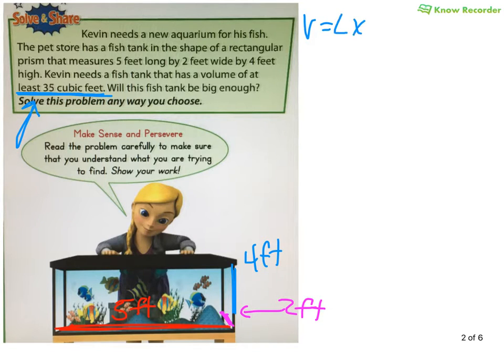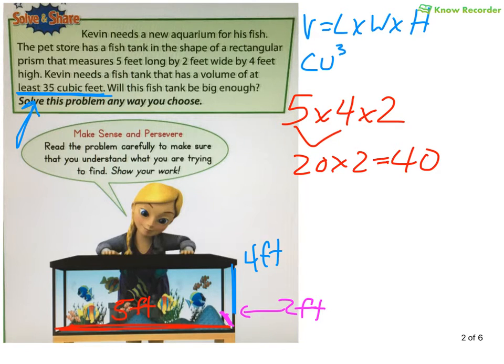If you remember, volume was length times width times height, and whatever we're putting this in, it's always going to be cubic units - whether it's inches, feet, centimeters, millimeters. It's got to be cubic because we're working with three different dimensions: a length, a width, and a height. So we have 5 times 4 times 2. It does not matter which order we multiply them. I could do 4 times 2 is 8, then 8 times 5 is 40. I could do 5 times 4 is 20 times 2 is 40. No matter how I do it, I'm going to get 40 feet cubed or cubic feet. So this fish tank is 40 cubic feet large. I needed to have at least 35, so because 40 is greater than 35, this is going to work out beautifully.